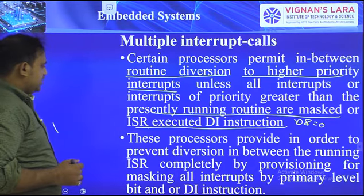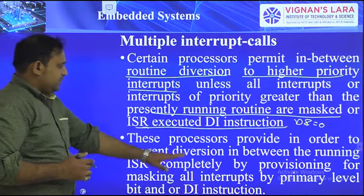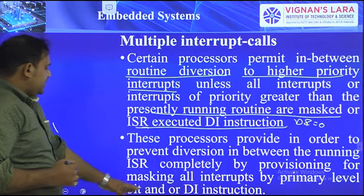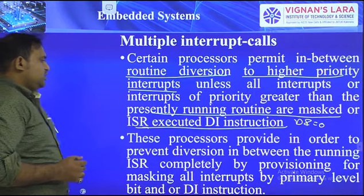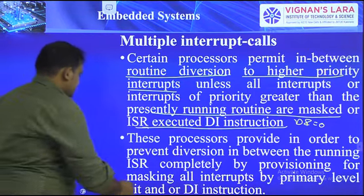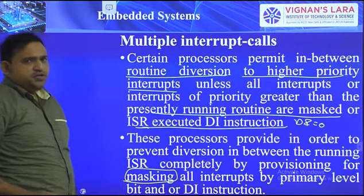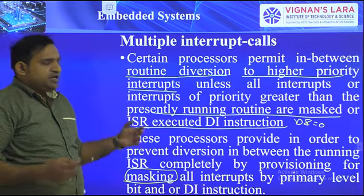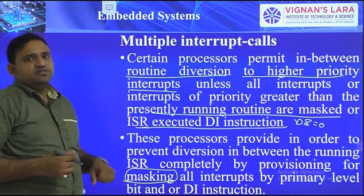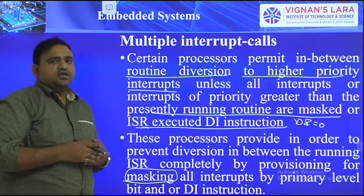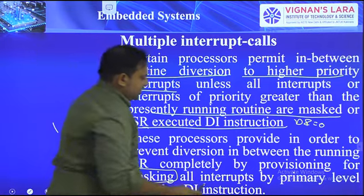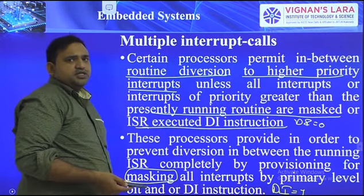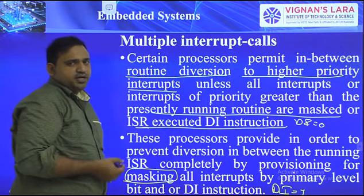The process also provides, in order to prevent diversion during the running ISR, the ability to mask all interrupts by a primary level bit or the DI instruction. Masking all interrupts means using the DI register we can enable or disable interrupts. If DI equals 1, interrupts are disabled and no input will be accepted.